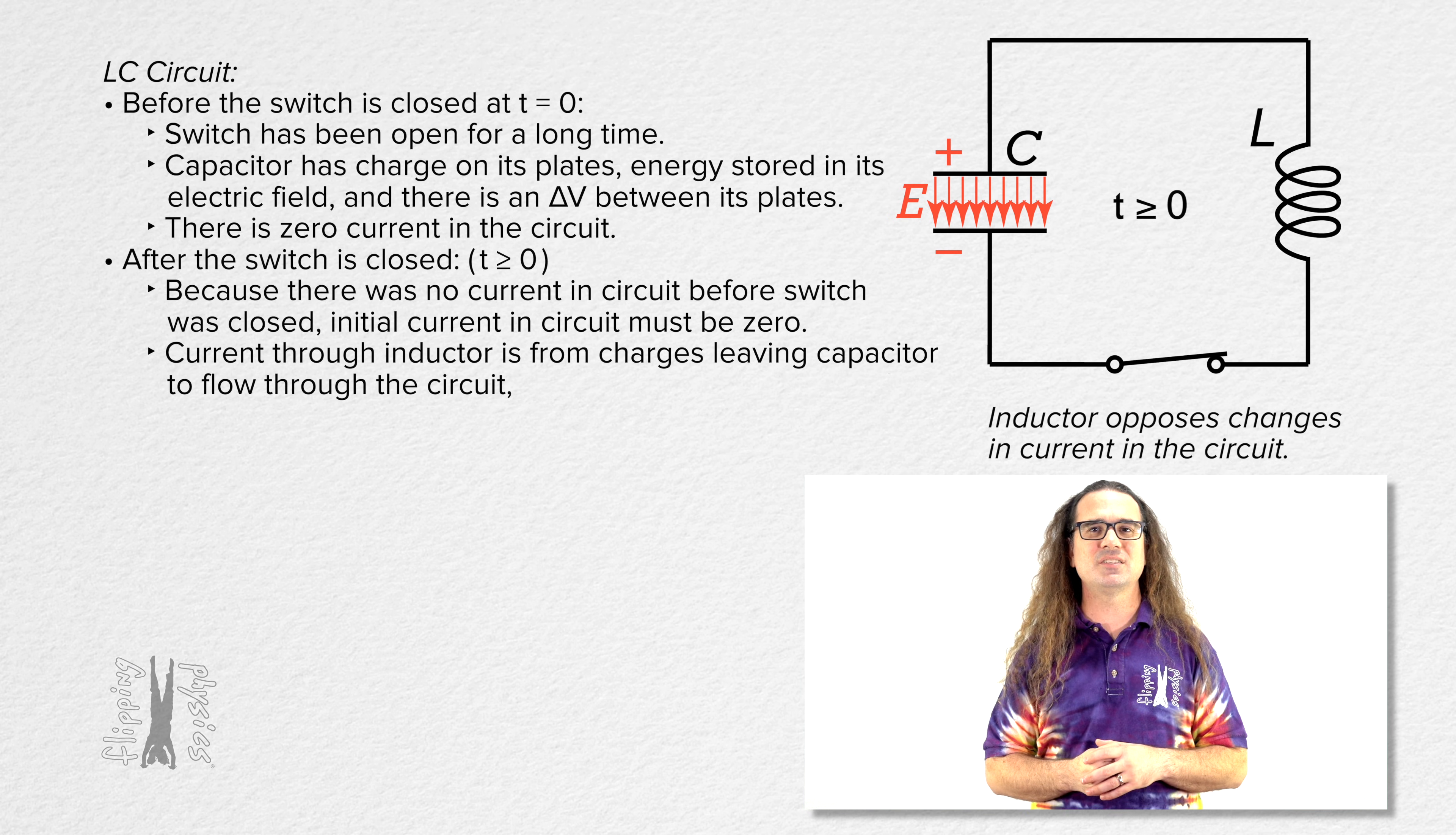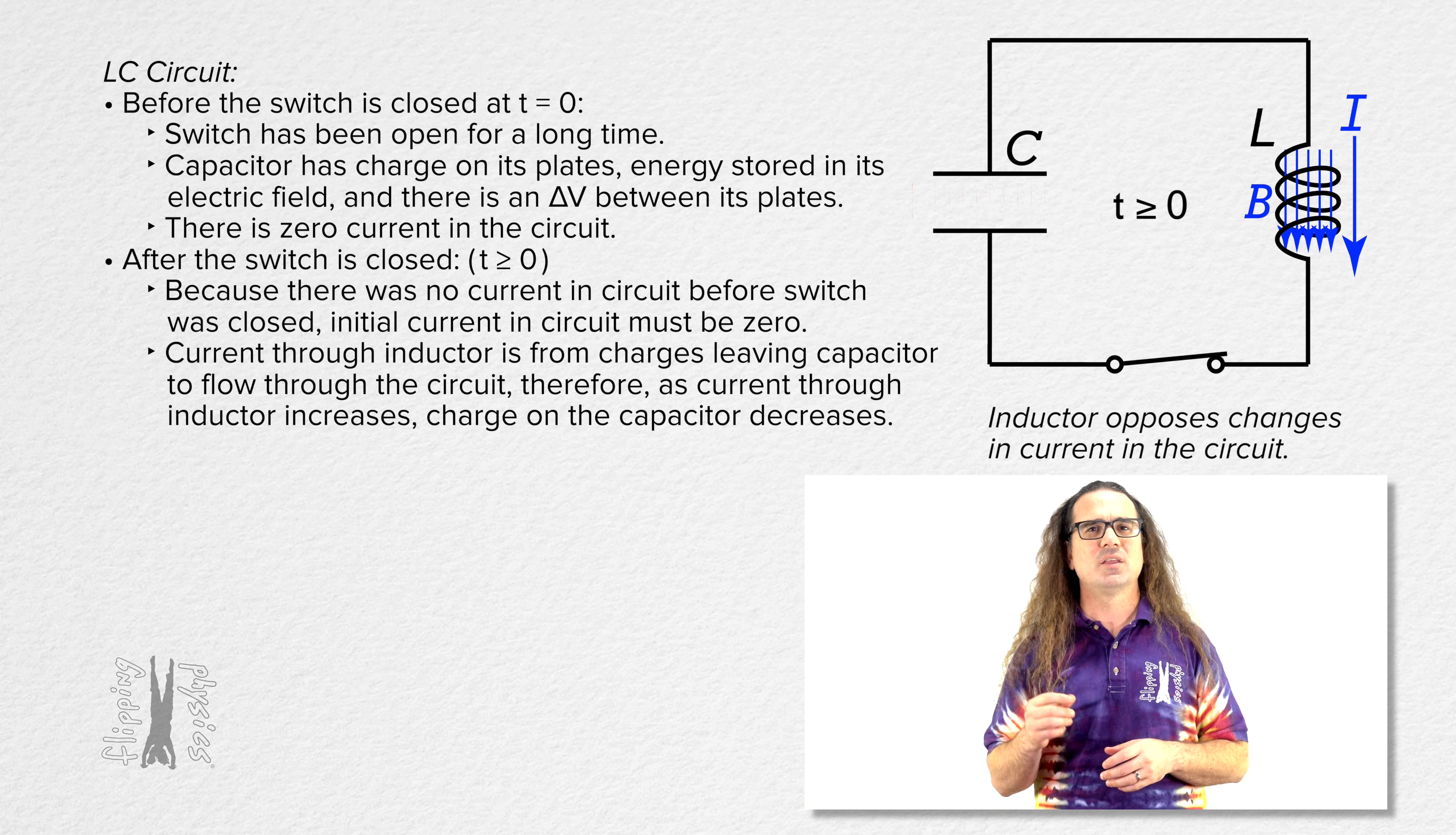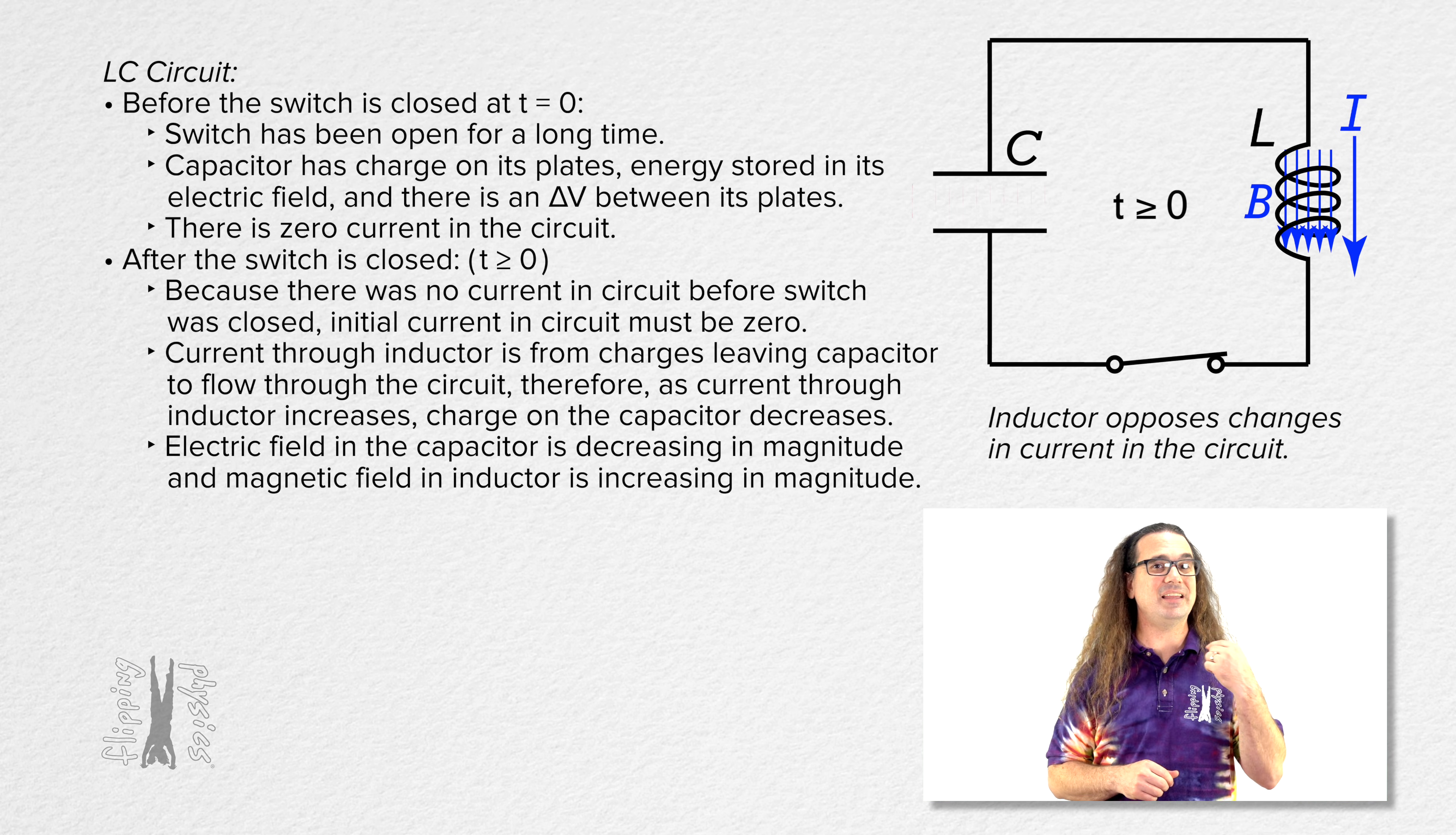The current passing through the inductor is caused by charges leaving the capacitor. Therefore, as current through the inductor increases, charge on the capacitor decreases. The current moving through the inductor causes a magnetic field in the inductor. Therefore, as the magnitude of the electric field in the capacitor decreases, the magnitude of the magnetic field in the inductor increases.